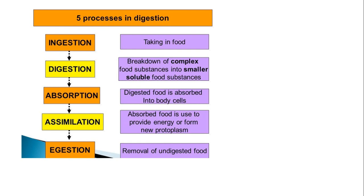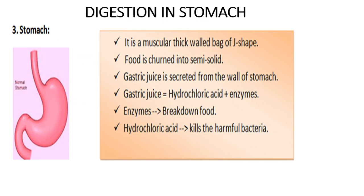The five processes of digestion: we take food inside our body through our mouth - that is ingestion. Breakdown of food substances into simpler substances happens - that is digestion. Digested food is absorbed into body cells - that is absorption. In assimilation, absorbed food is used to provide energy. Finally, egestion is the removal of undigested food. I hope you have revised all these things.